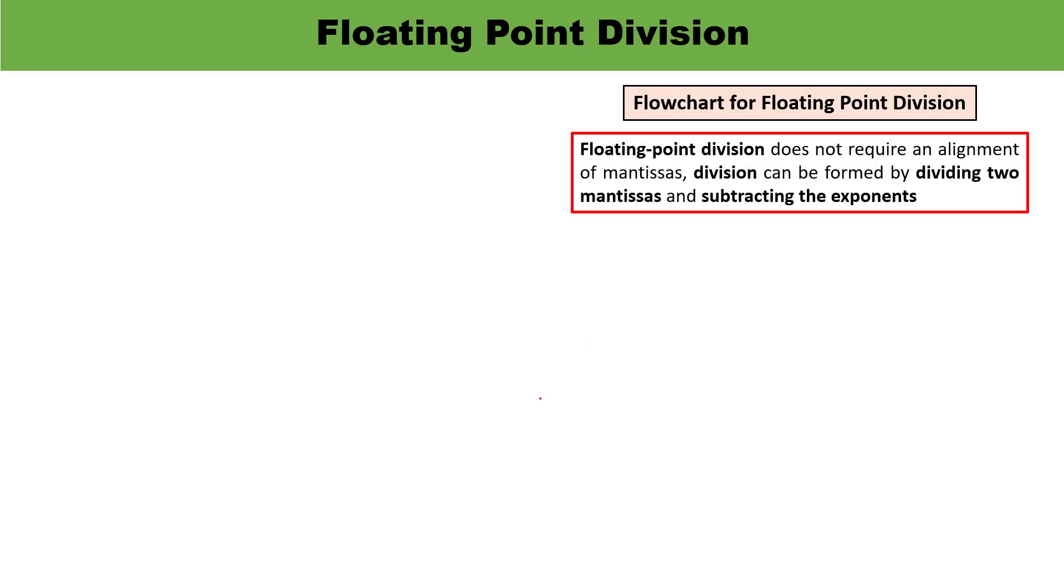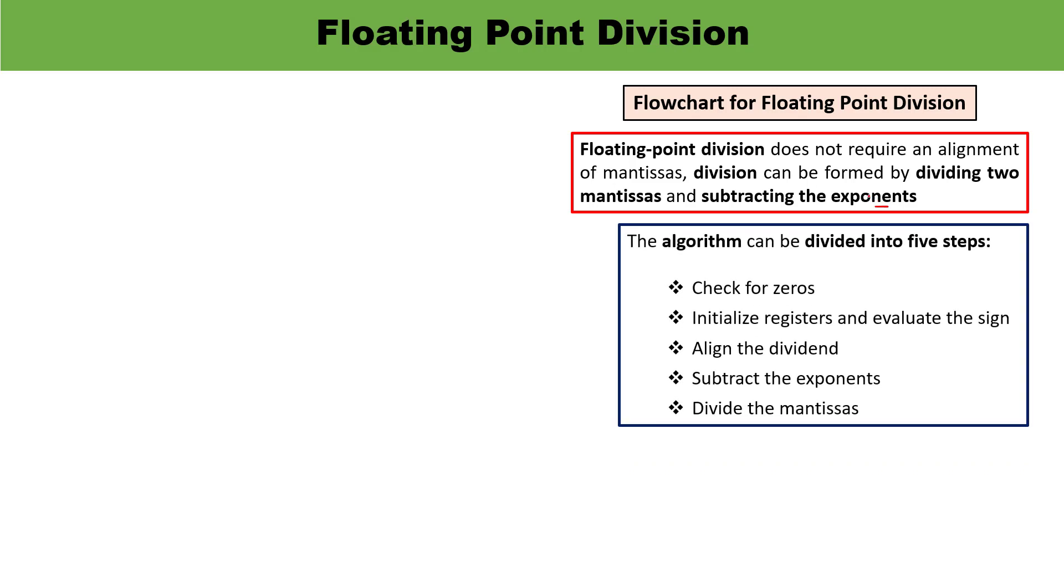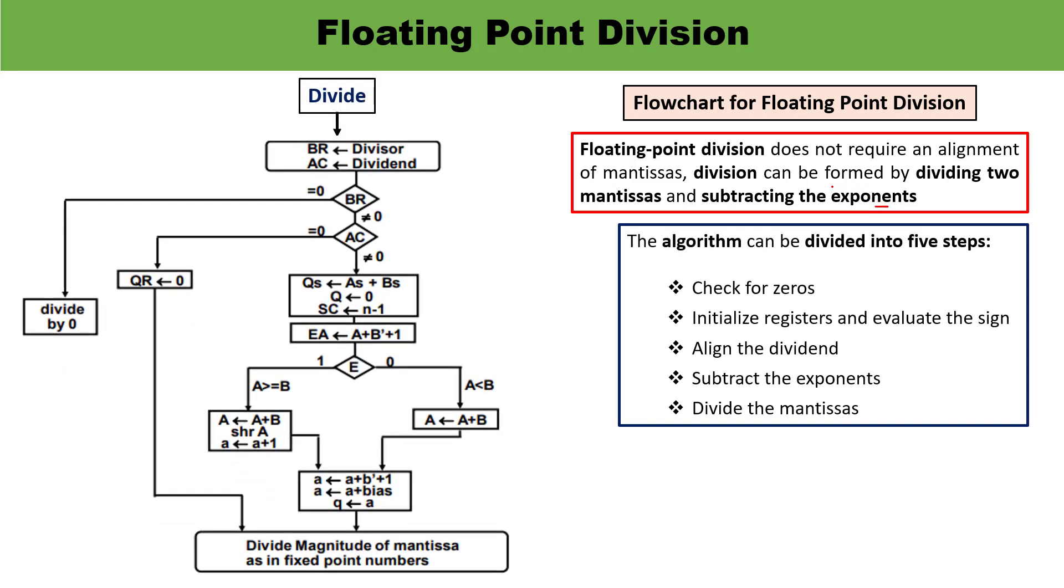Now let us talk about the flowchart for floating point division. For floating point division there is no requirement to align the mantissas. Division can be formed by dividing two mantissas and subtracting the exponents. This algorithm can be divided into five steps. This is the flowchart. You must be able to understand this, it is very easy.